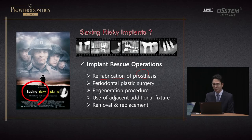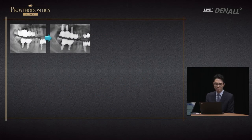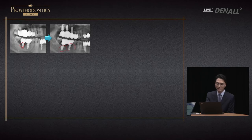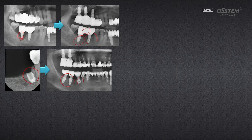At times you can just provide prosthodontic treatment again, but at times it may require periodontoplastic surgery and regeneration procedures to compensate for bone loss. You may need to place additional implants or remove existing ones and place new ones. In one case, an implant was connected to the adjacent implant and prosthodontic treatment was provided. We need to know the type of adjacent implant to be able to provide a prosthesis.